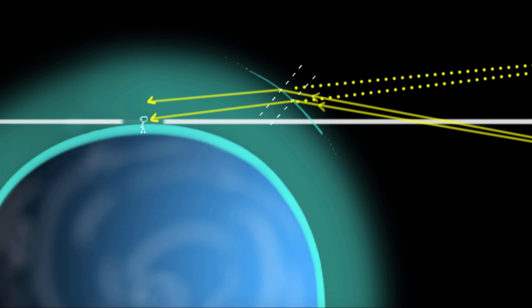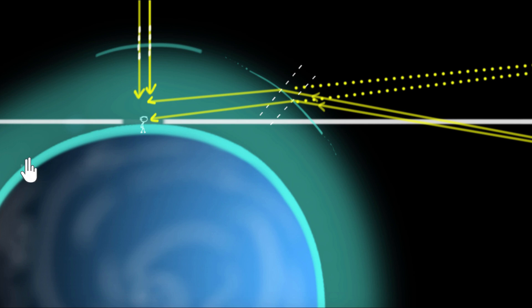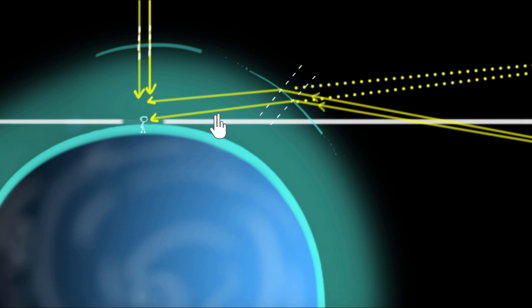When the sun is right above us, the incident light is almost perpendicular to the surface, and as a result, the light would hardly bend. So there'll be hardly any shift in the object's position.